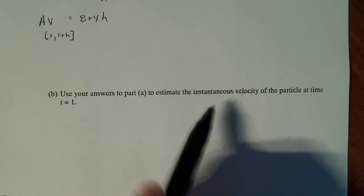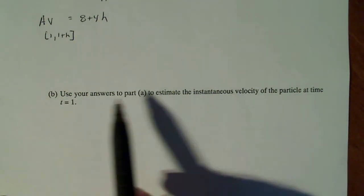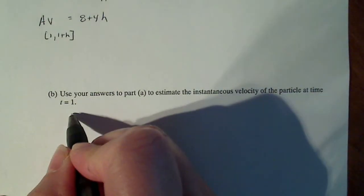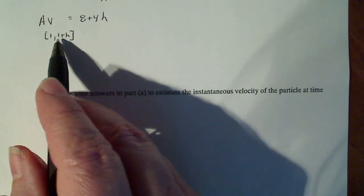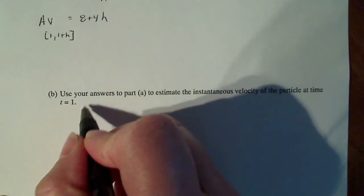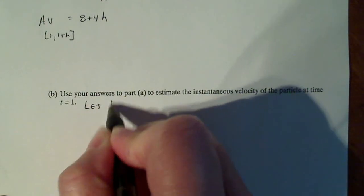So instantaneous velocity is the average rate of change between two points that are really close together. So if I let h be really small,